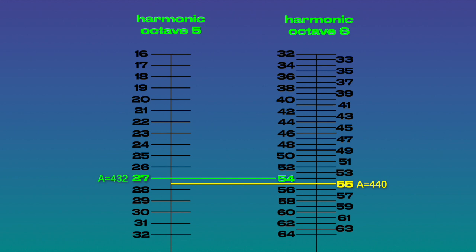A432 is generated in the octave between the 16th and 32nd harmonic, while A440 is generated in the next octave up.